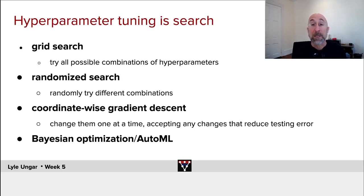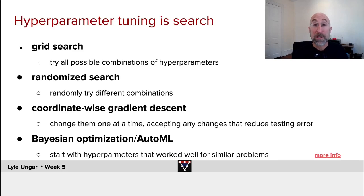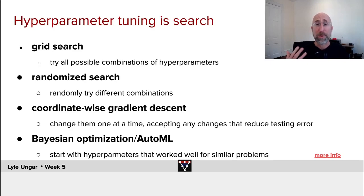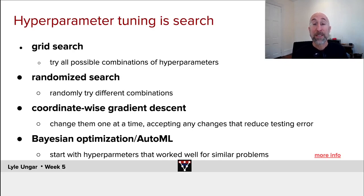Recently it's become quite popular, particularly if you're at Google or someplace with lots of compute power, to do Bayesian optimization. Bayesian optimization starts from the same premise: start with hyperparameters that worked well for similar problems — something like a similar vision recognition problem or a similar NLP problem — often using pre-trained embeddings or partial models. Start with the architecture and hyperparameters that worked well, and then do a localized search in the flavor of coordinate-wise gradient descent, but often using some sort of a local model to guide that descent. The details are beyond this course, but you can click on the link and get more information.